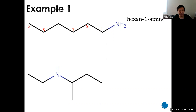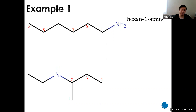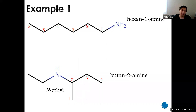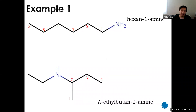The next one is tricky. The longest carbon chain is not three - the right side is a butyl with four carbons, not a propyl with a methyl group. The nitrogen is on carbon two, so that's butan-2-amine. The other branch is an ethyl on the nitrogen. Putting it together: N-ethyl-butan-2-amine. Don't fall for that trap.